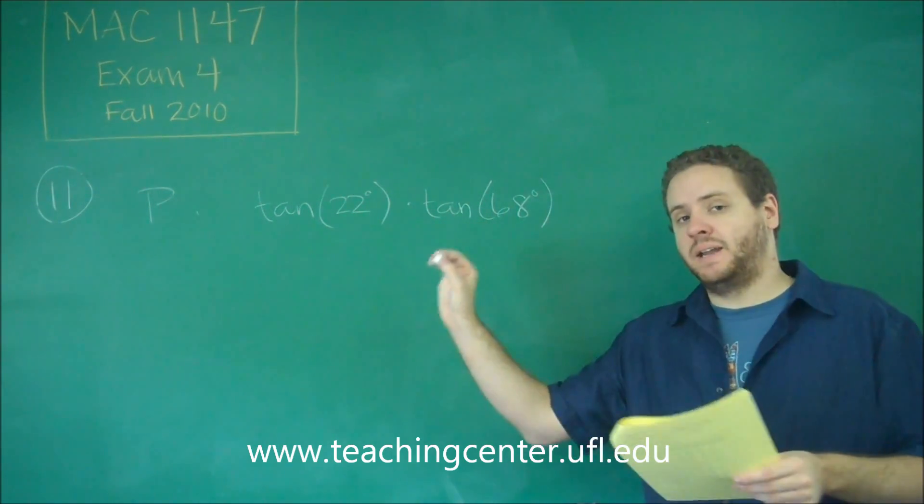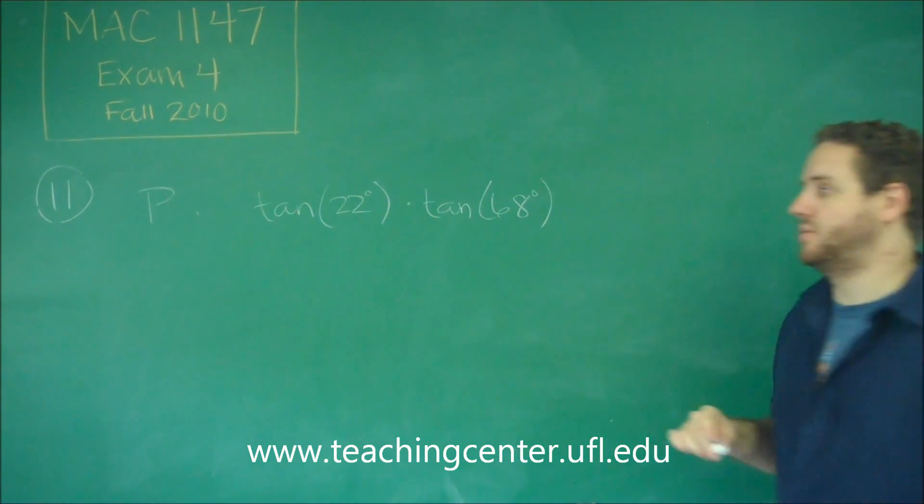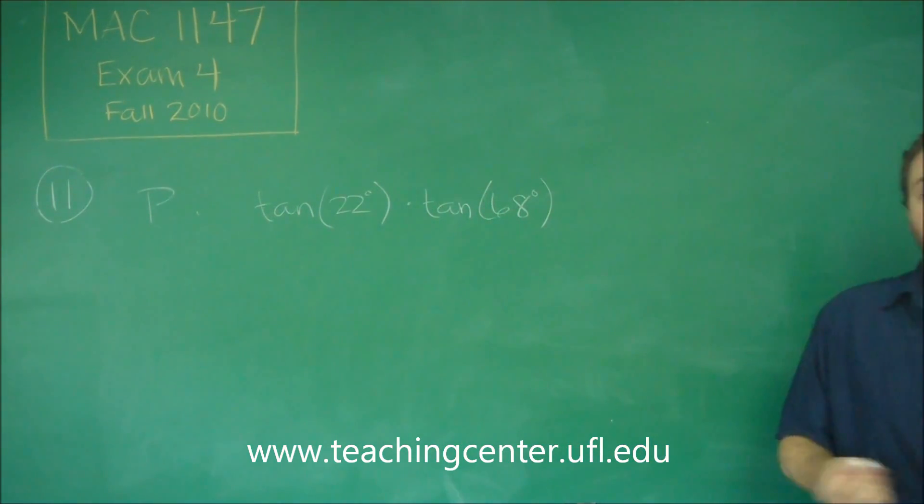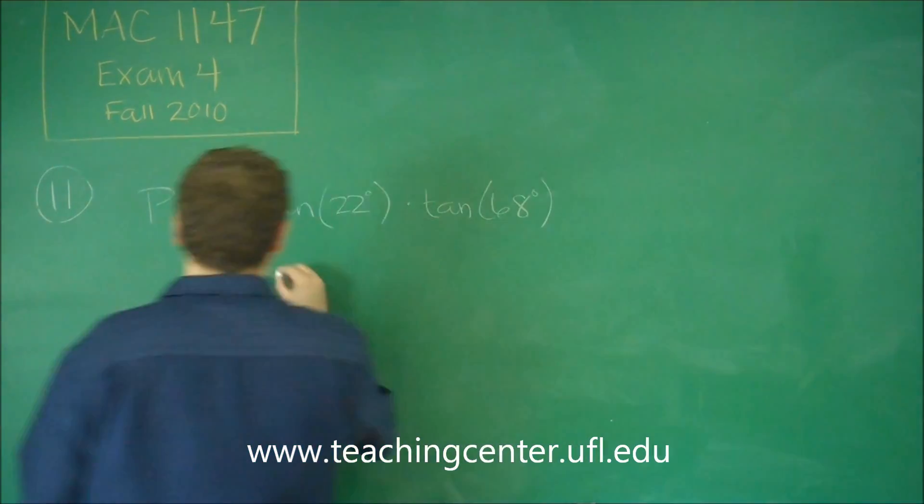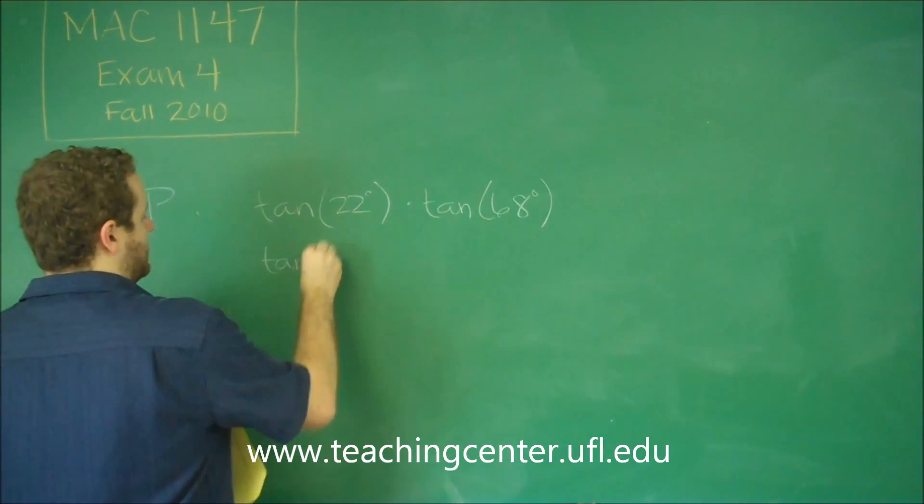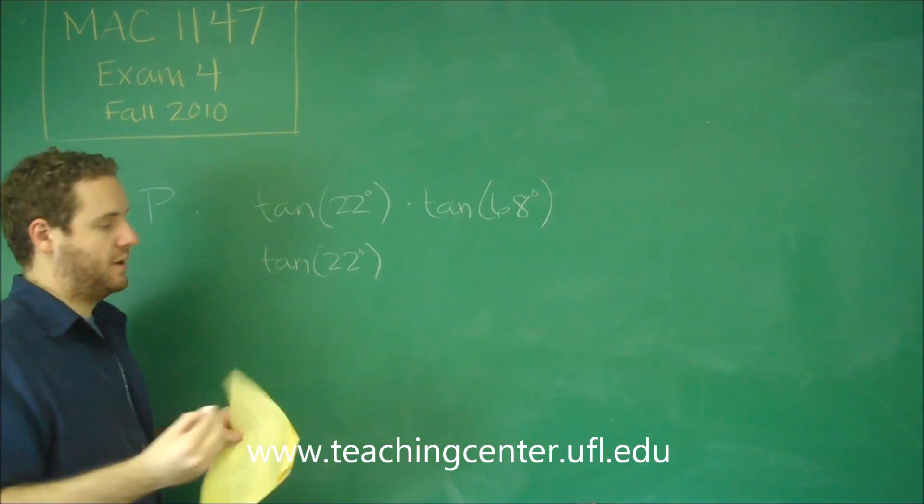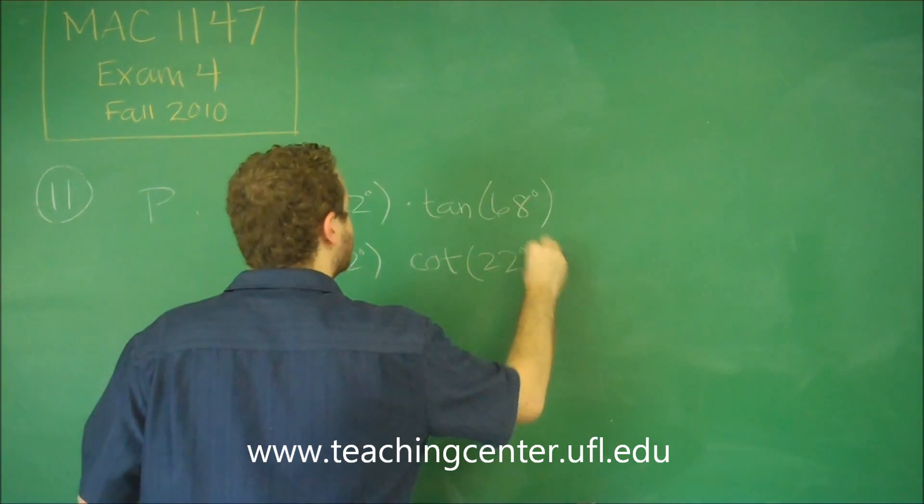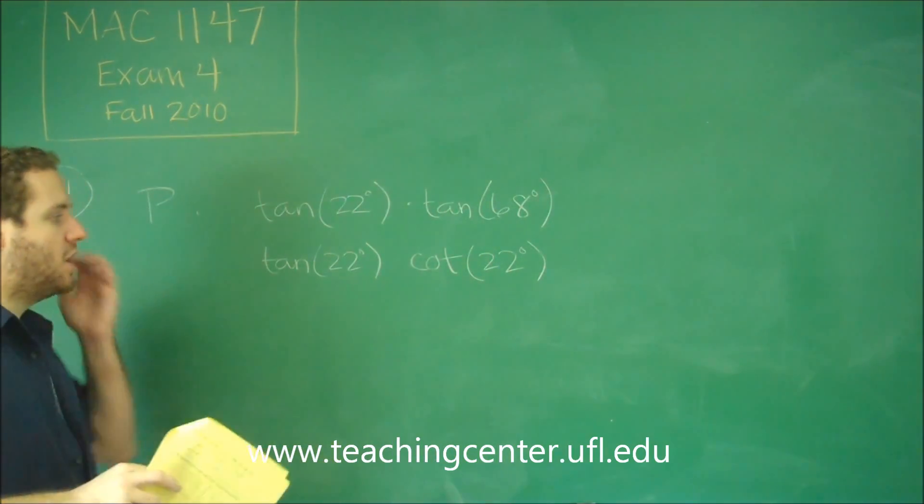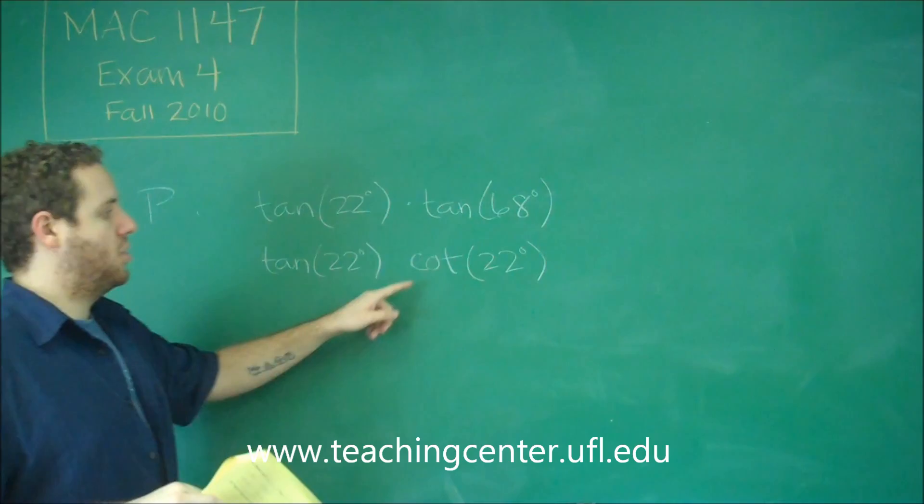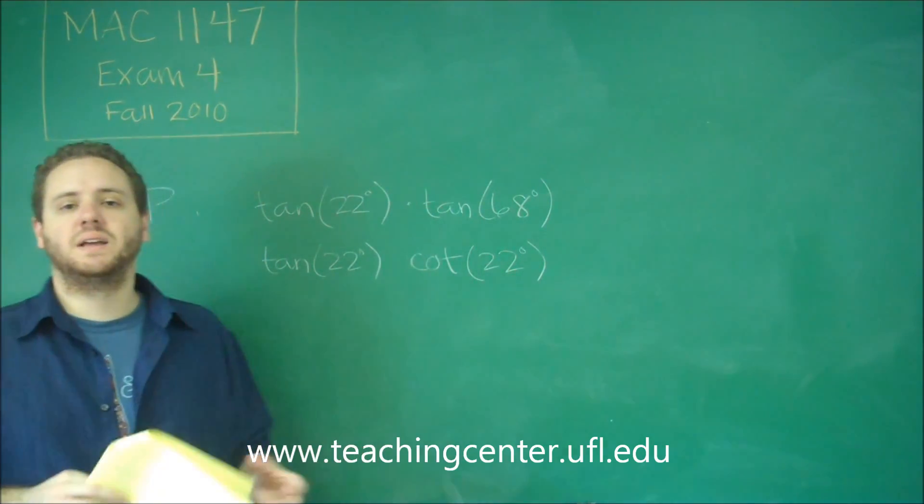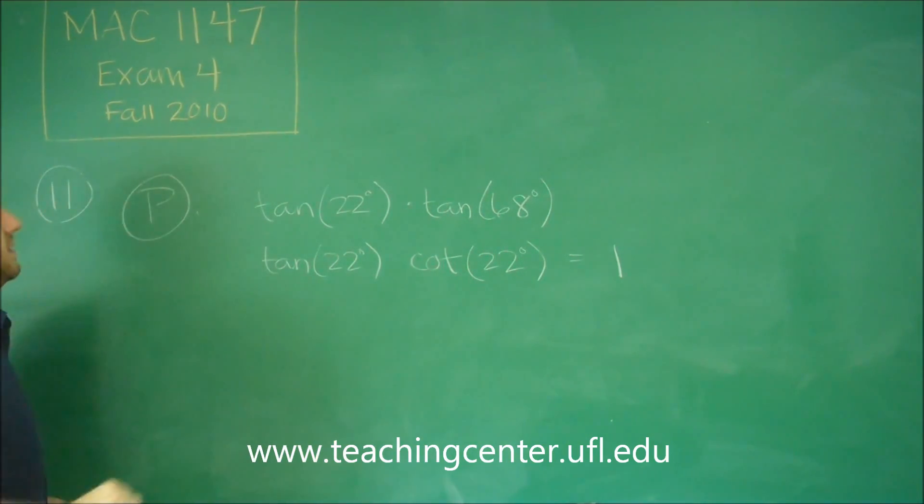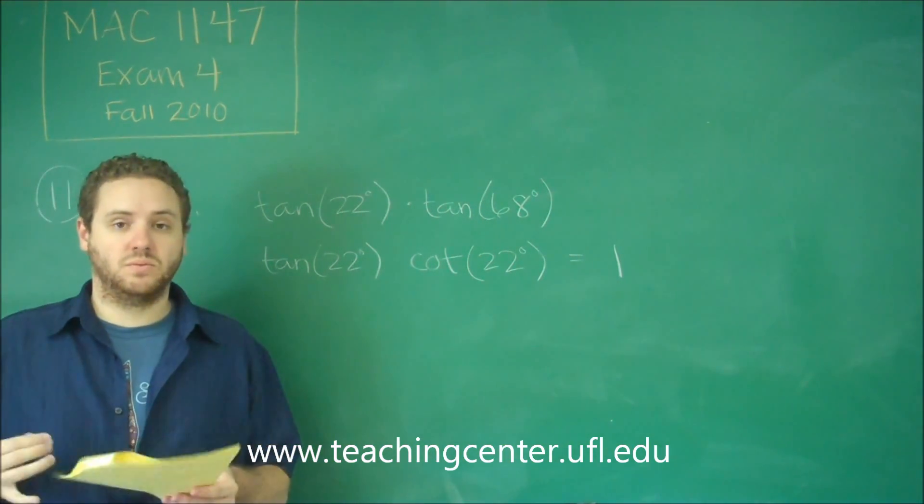So tan 68 is the same thing as cotangent of 22, or tan 22 is the same thing as cotangent of 68. Either way you do this, let's just keep the angle smaller. Tangent times cotangent - tangent is sine over cosine, and cotangent is cosine over sine. So everything cancels out, and you definitely just get one. So P definitely does equal one, so that one works.